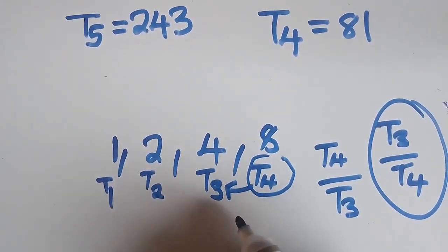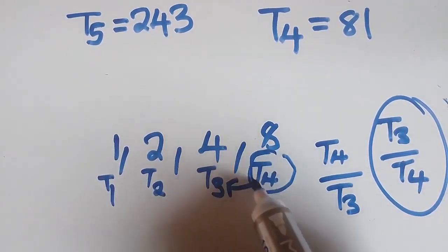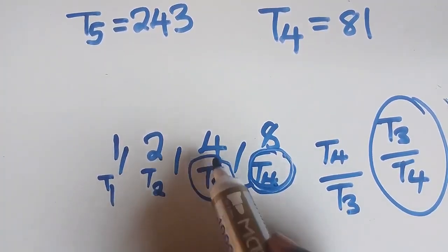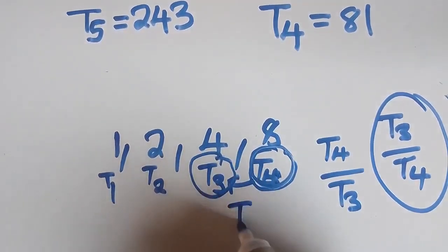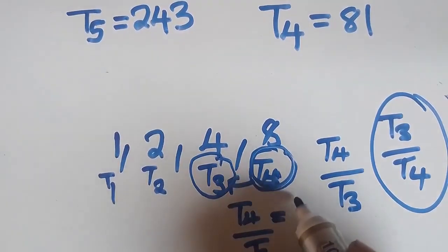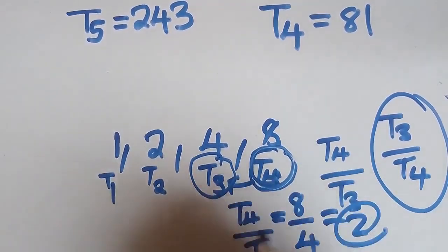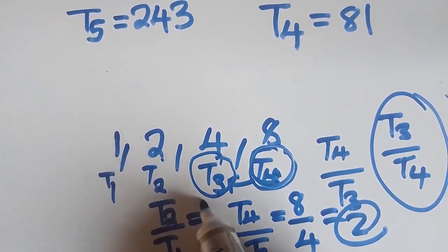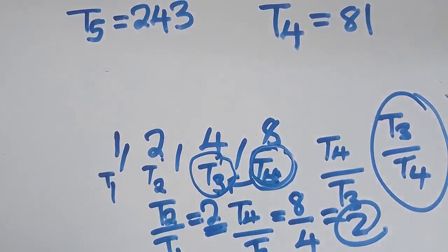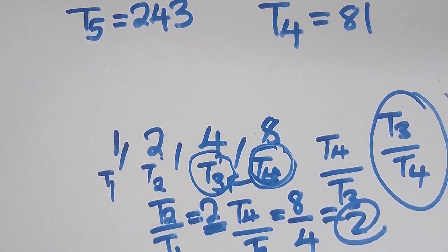By the definition of a geometric progression, the common ratio is found by getting the preceding term divided by the previous term. So if you say T4 over T3, which equals 80 over 4, you get the answer 2. Even T2 over T1 gives 2 divided by 1, which is also 2. You always get the same answer — this is how we find the common ratio.